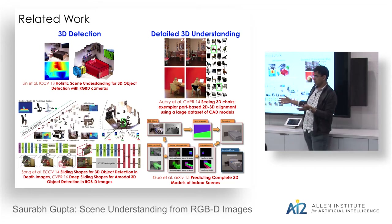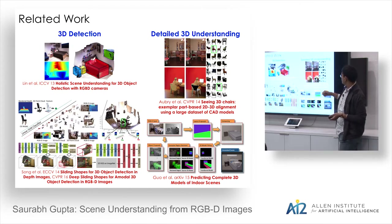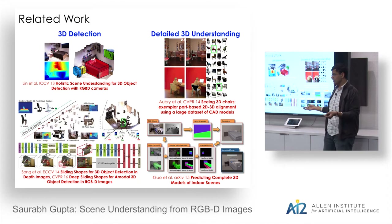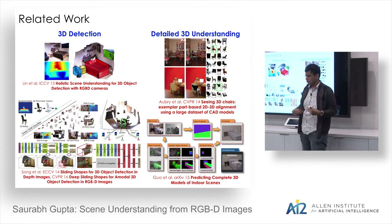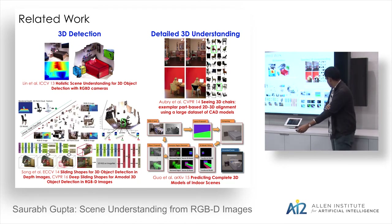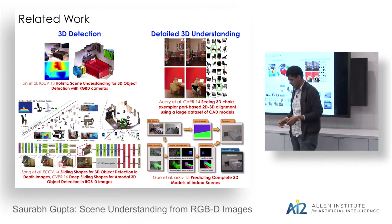More recently, there has been effort toward richer 3D understanding. One line of work is 3D detection — not just a 2D bounding box, but also a 3D bounding box. Most related to today's talk is detailed 3D understanding, such as 'seeing 3D chairs,' which brings in CAD models and aligns them to data, giving understanding beyond what you see — including how the chair looks from other viewpoints.